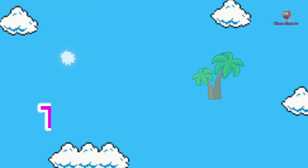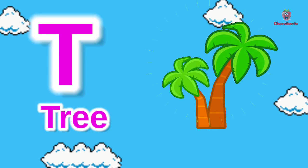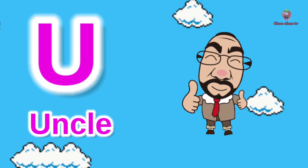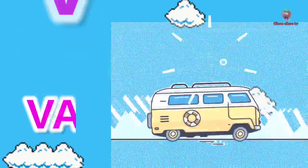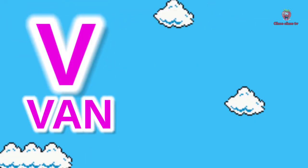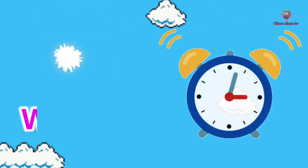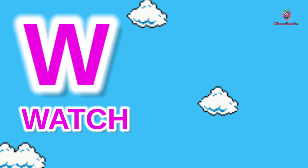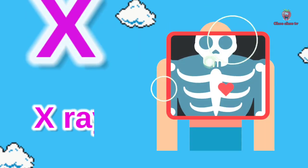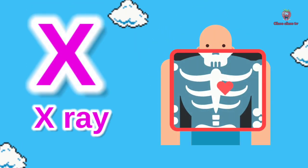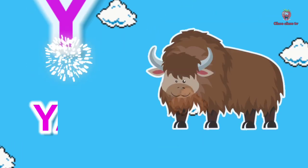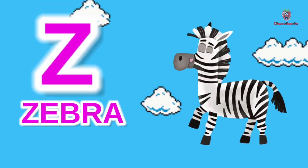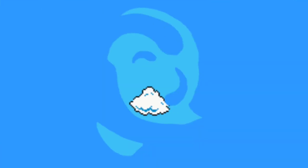T for tree, U for uncle, V for van, W for watch, X for x-ray, Y for yak, Z for zebra.